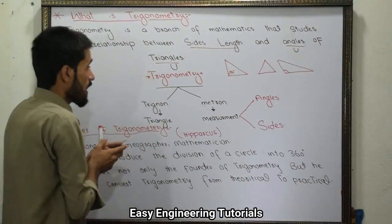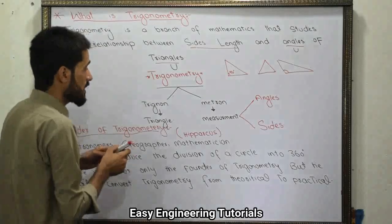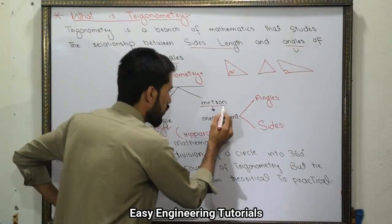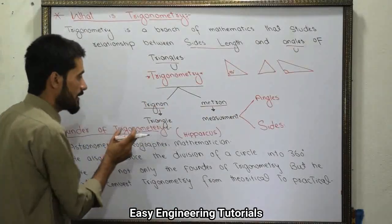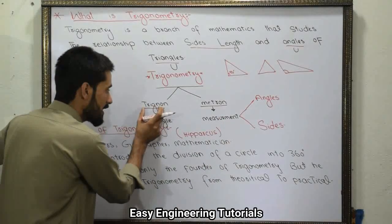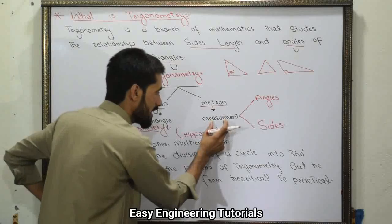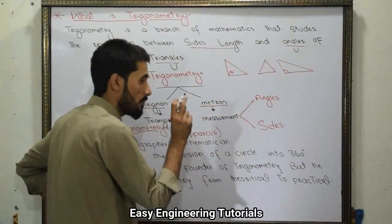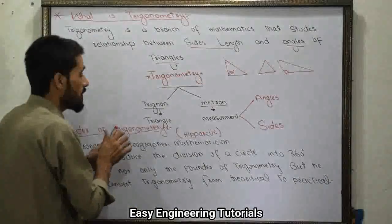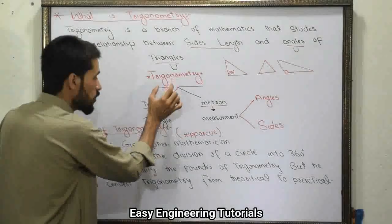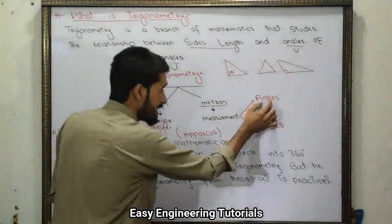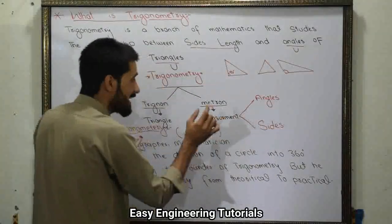Trigonometry is made up of two words. The first is 'trigonon' and the second is 'metron'. Trigonon means triangles and metron means measurement. So trigonometry means the measurement of angles and side lengths of triangles.